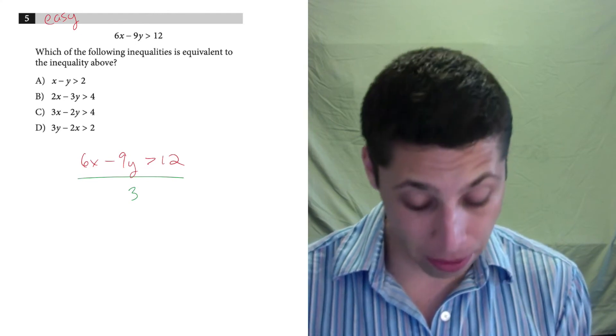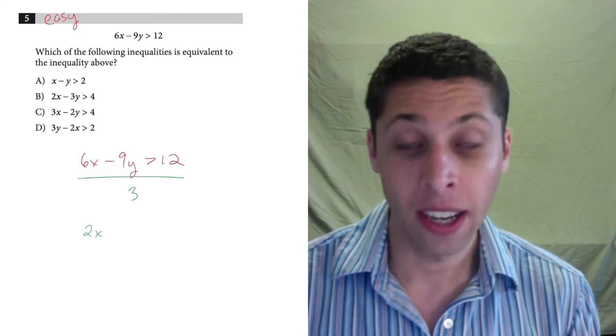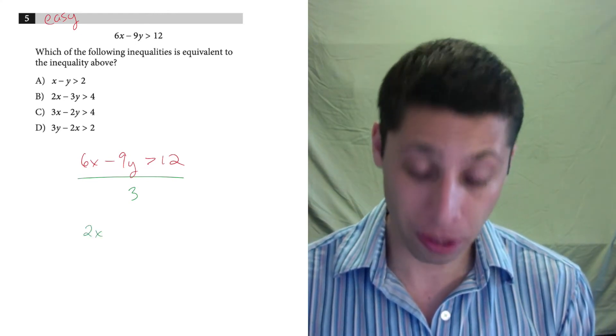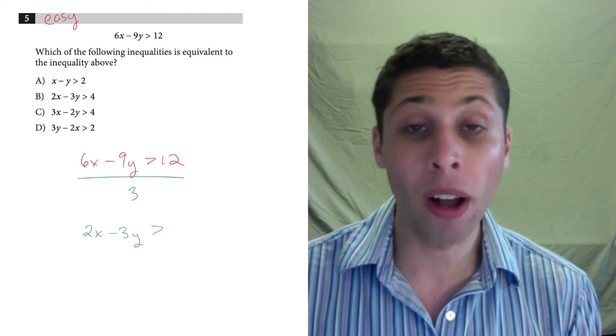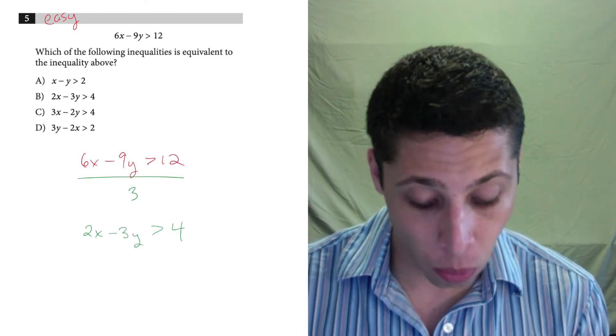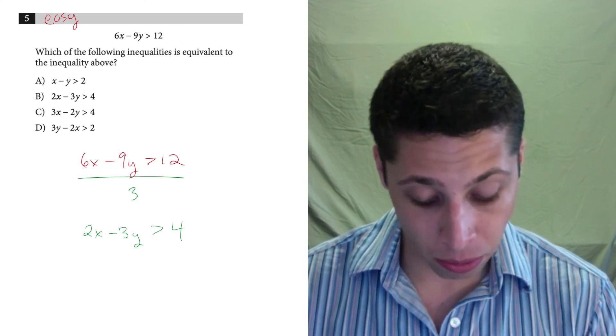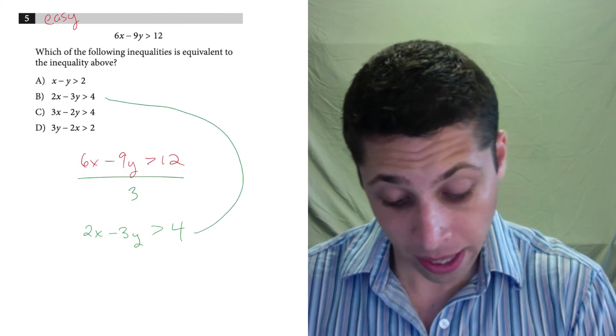So I could just divide this entire equation by three and see what happens. So 6x divided by three is 2x, negative 9y divided by three is negative 3y, and then 12 divided by three is 4.